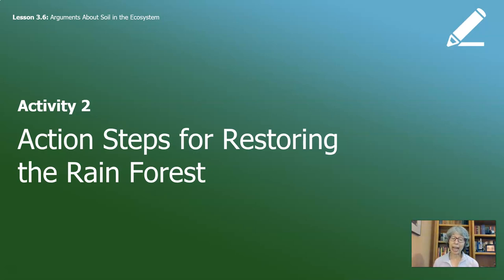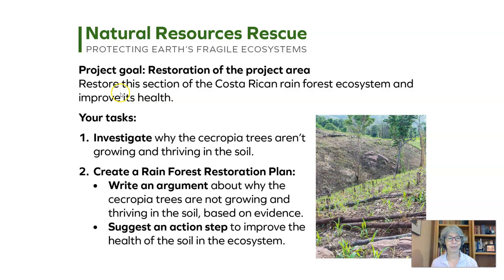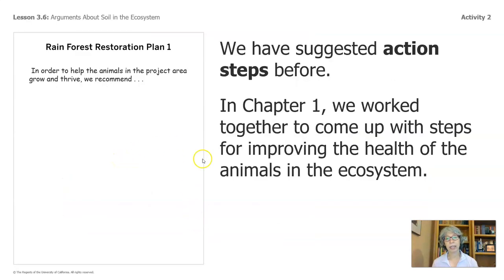Activity 2: Action Steps for Restoring the Rainforest. I hope you will take your writing to your next class meeting and share some of those ideas, specifically how you linked your evidence together. We've investigated why the cecropia trees aren't growing and thriving, we've written that argument, and now it's time to suggest an action step to improve the health of the soil in this ecosystem. In Chapter 1, we worked together to come up with steps for improving the health of the animals in the ecosystem.